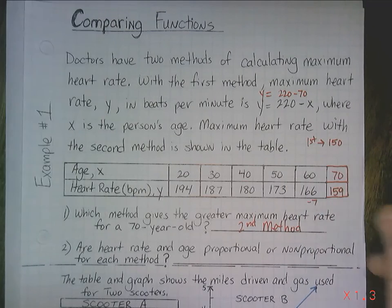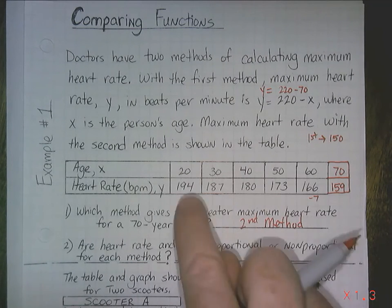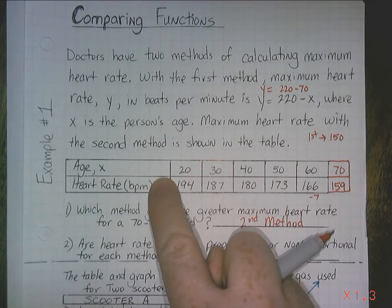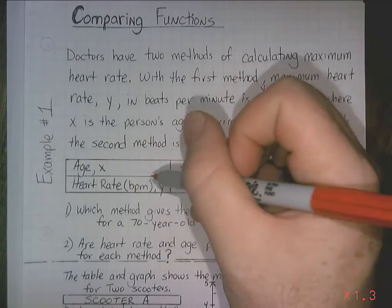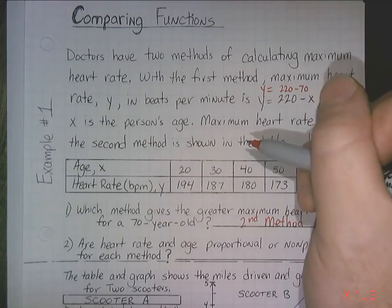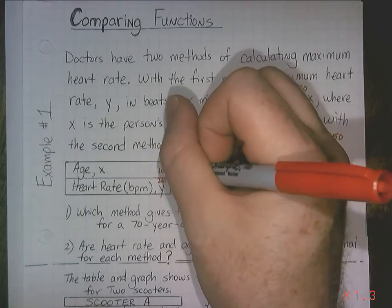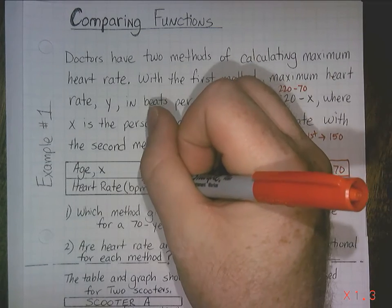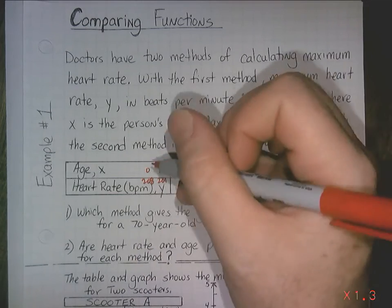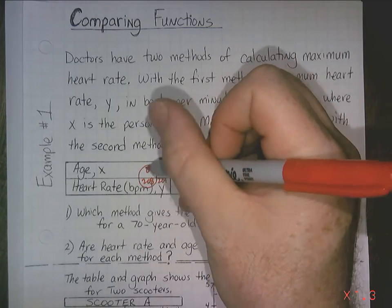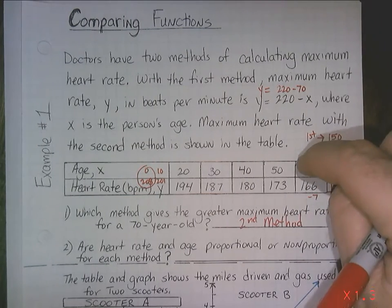And the last question here is, are the heart rates of age proportional or non-proportional for each method? Well, at age 0, we know that the maximum heart rate, in terms of beats per minute, would be 208, I believe, right? If we add 7 here, this would be 201 for a 10-year-old. And then for like an infant, it would be about 208, roughly. So if that's the case, it doesn't start at 0,0. This doesn't start at 0,0.